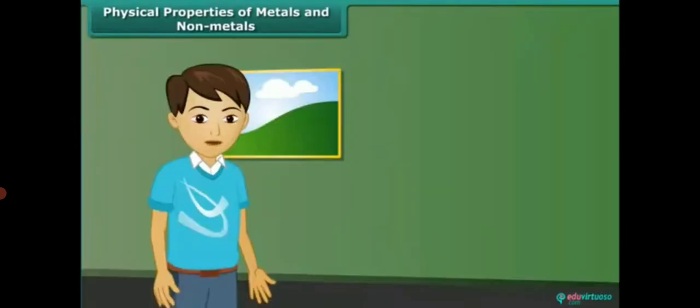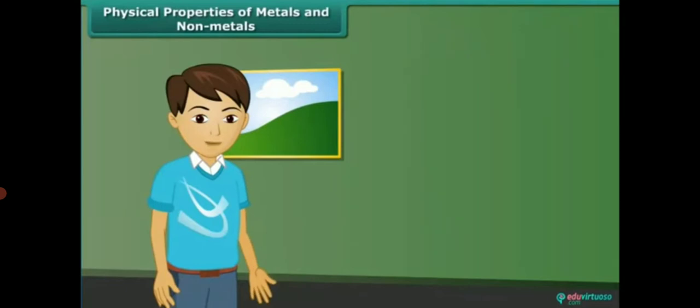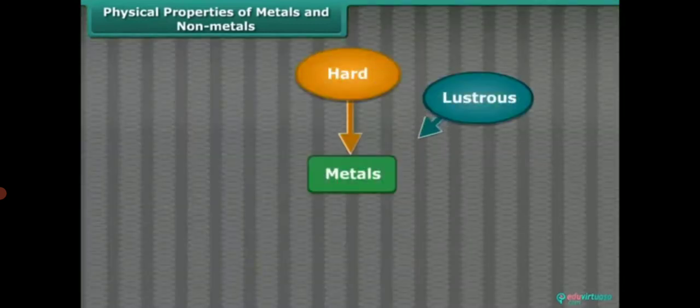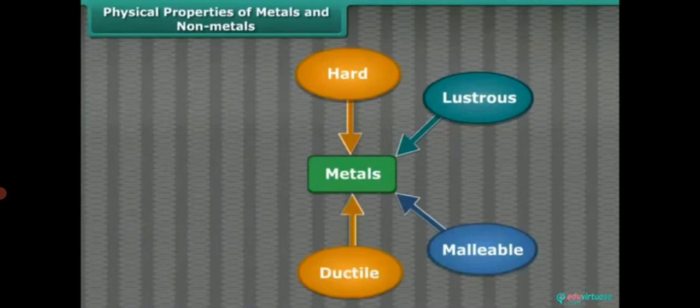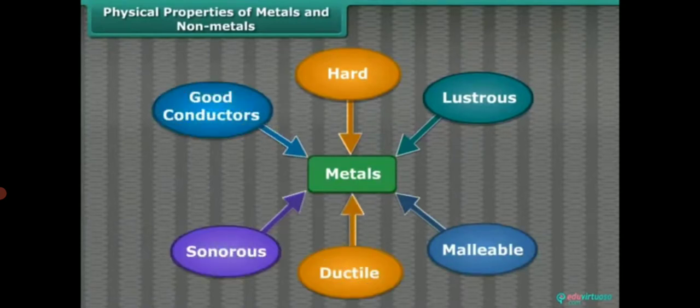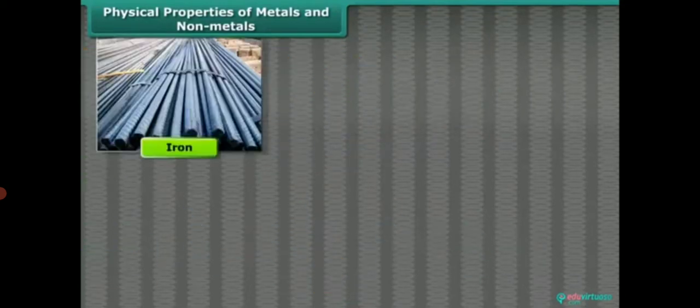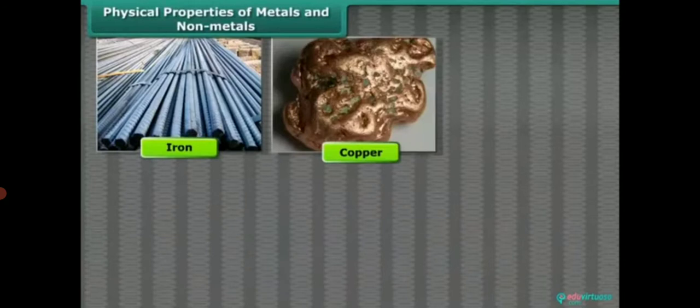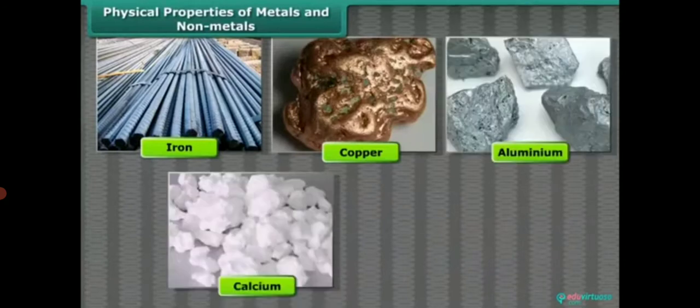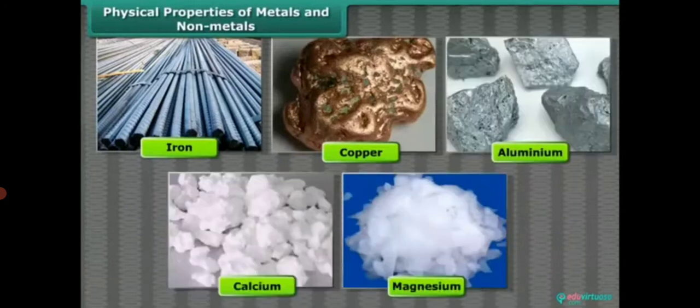So students, by these properties we can say that metals are hard, lustrous, malleable, ductile, sonorous and good conductors of heat and electricity. Examples: iron, copper, aluminum, calcium, magnesium, etc. are the examples of metals.